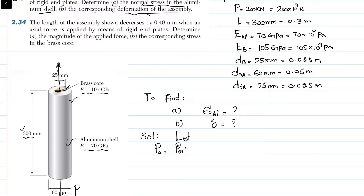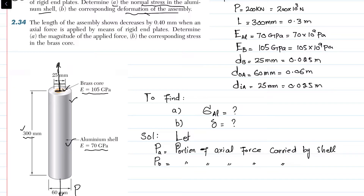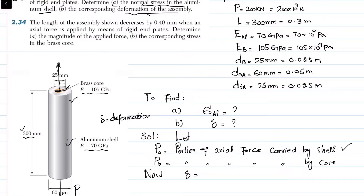Let P_a be the portion of axial force carried by the aluminum shell, and P_b be the portion of axial force carried by the brass core. Due to this load, the total deformation delta of the assembly is the same for both brass and aluminum — this is the compatibility condition.